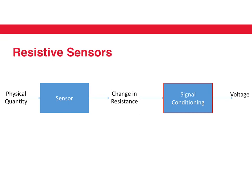In general, what the signal conditioning circuit needs to do is convert the change in resistance into a change in voltage. At this moment, maybe you could pause and think about what is a way in which you can convert a change in resistance to a voltage. Do you know any circuit that does that?